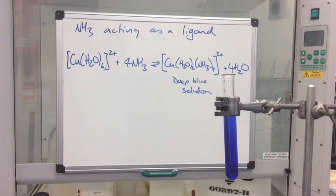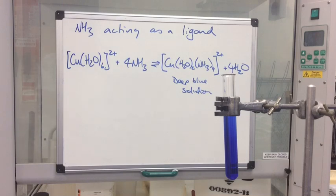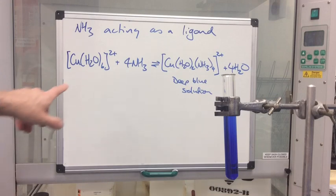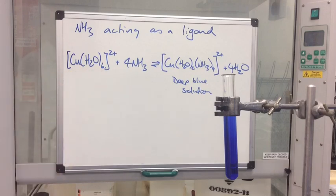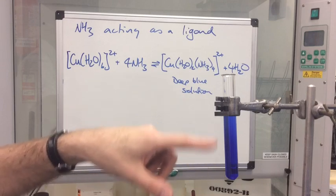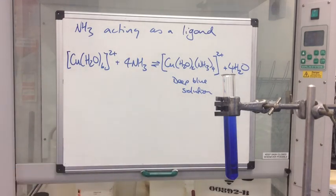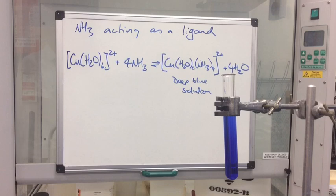When the ammonia is in excess it acts as a ligand, and we get the reaction on the board: four ammonia ligands replace four of the water molecules in the hexa aqua 2+ ion, giving us this deep blue solution. The product is the copper ion with two water ligands still attached and four ammonia ligands, retaining the 2+ charge because all ligands are neutral. This is the ligand substitution reaction.